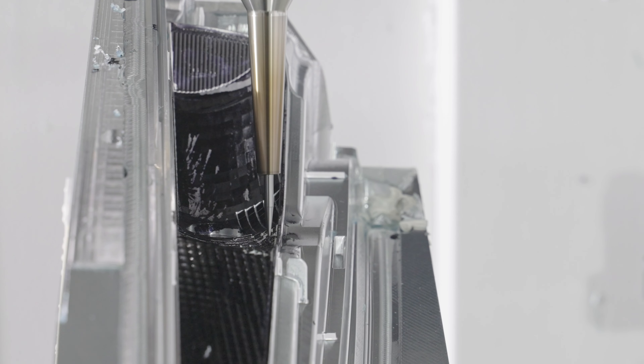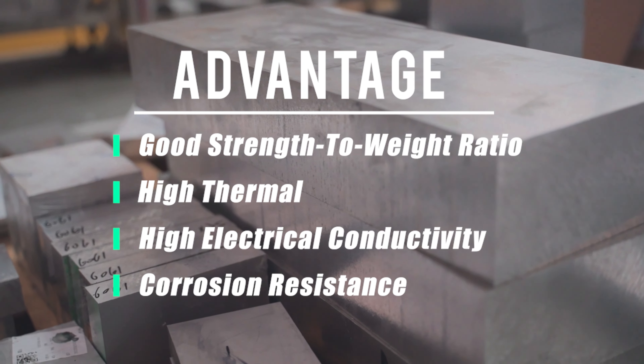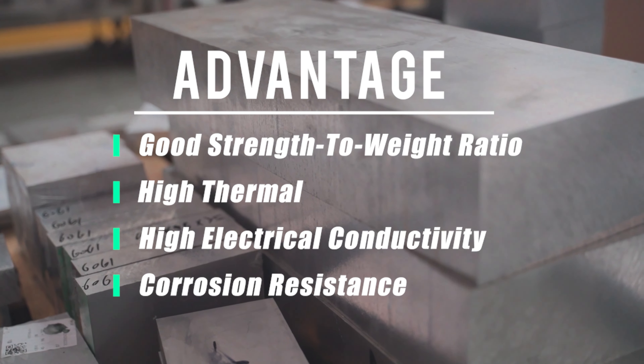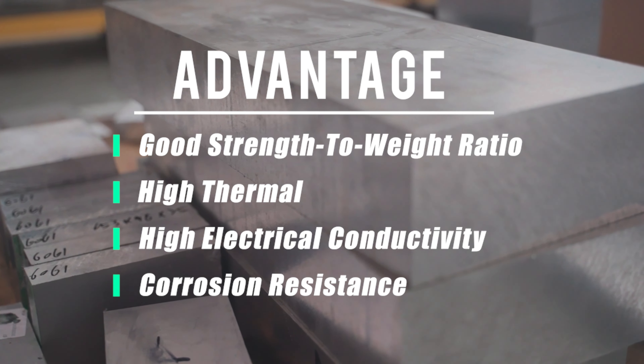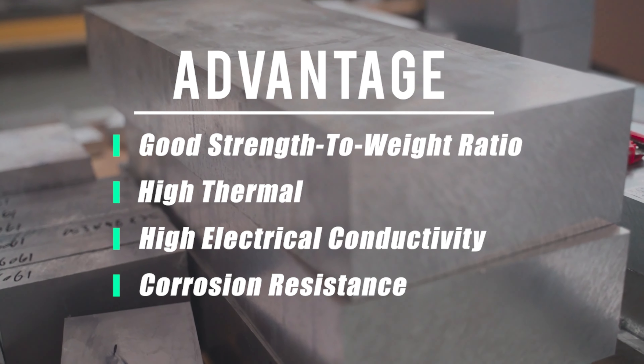Today we will introduce you to two common materials used in CNC manufacturing. Aluminum alloys are easy to machine in large volumes, have a good strength-to-weight ratio, and high thermal and electrical conductivity.